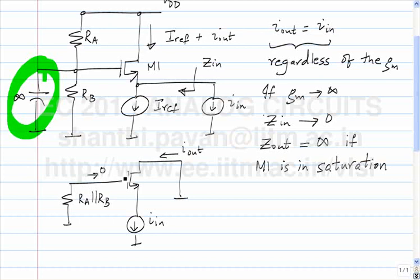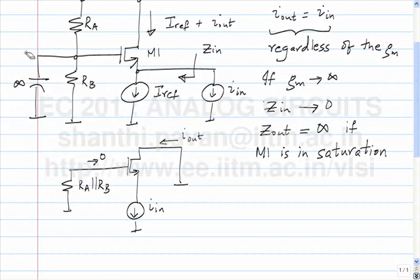In practice however, it turns out — and we will see this when we look at the frequency response of these amplifiers — that even though the DC current flowing through the gate is 0, there will be AC current flowing through the gate, in which case it becomes mandatory to have some kind of capacitor between the gate and ground. But at this point in time, it is not strictly necessary to have this capacitor at the gate.